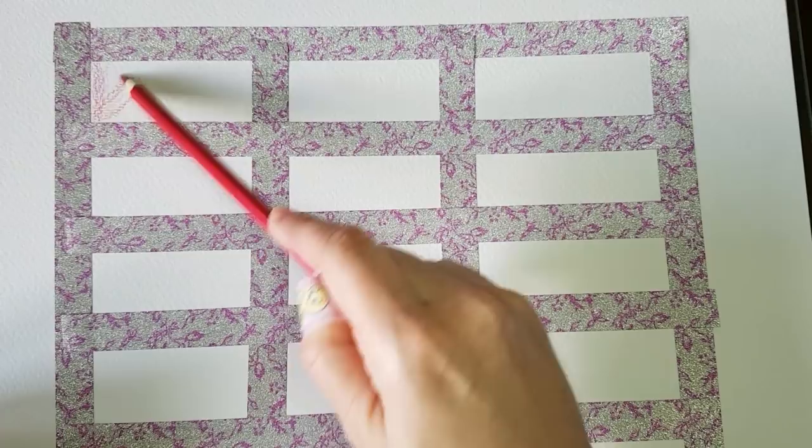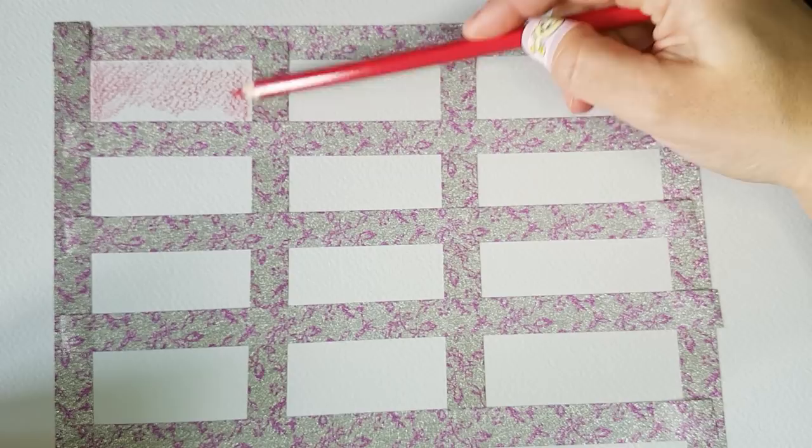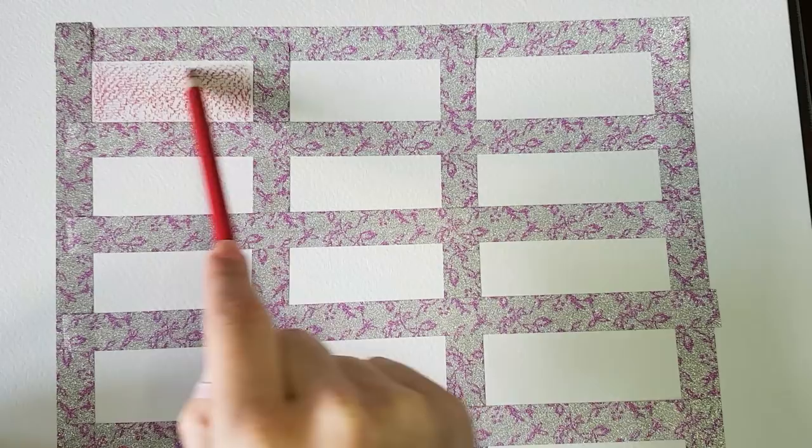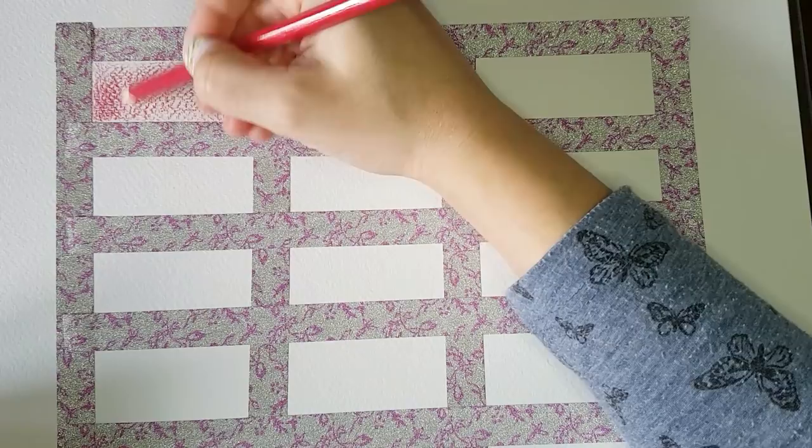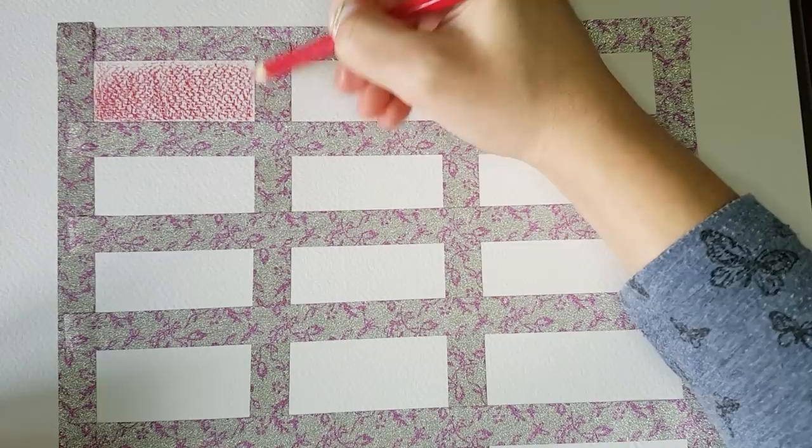The first technique I will show you is a solid color. I go over the first rectangle with an even layer of red. You can use any color you like. The point of this is that you use a dry pencil on dry paper. The more you press on the pencil the more pigment will be left on the paper but make sure you don't press too hard and don't ruin the tooth of the paper. The best approach here is layering.